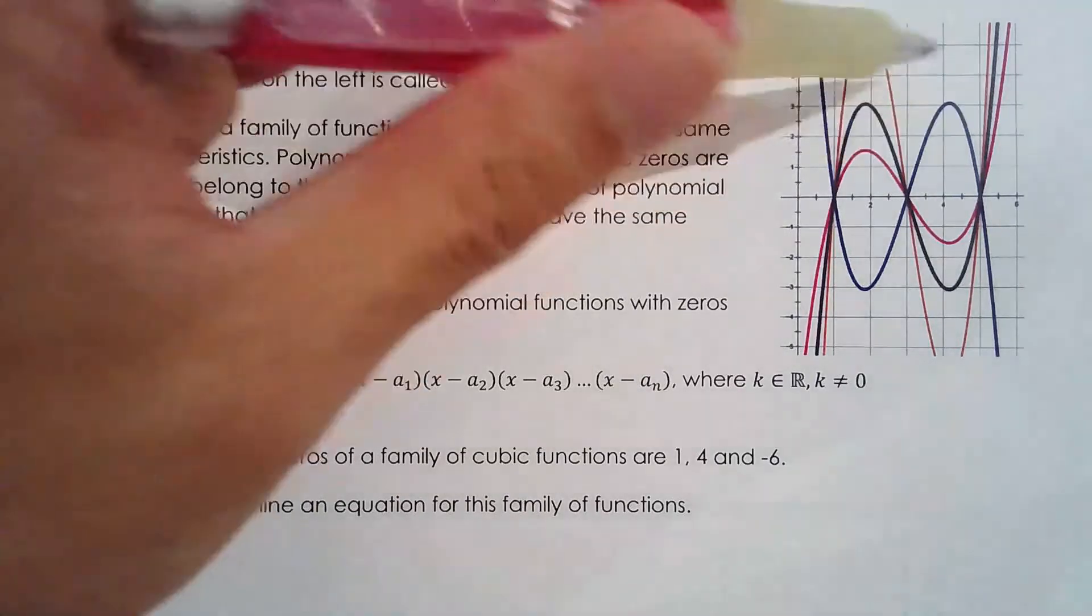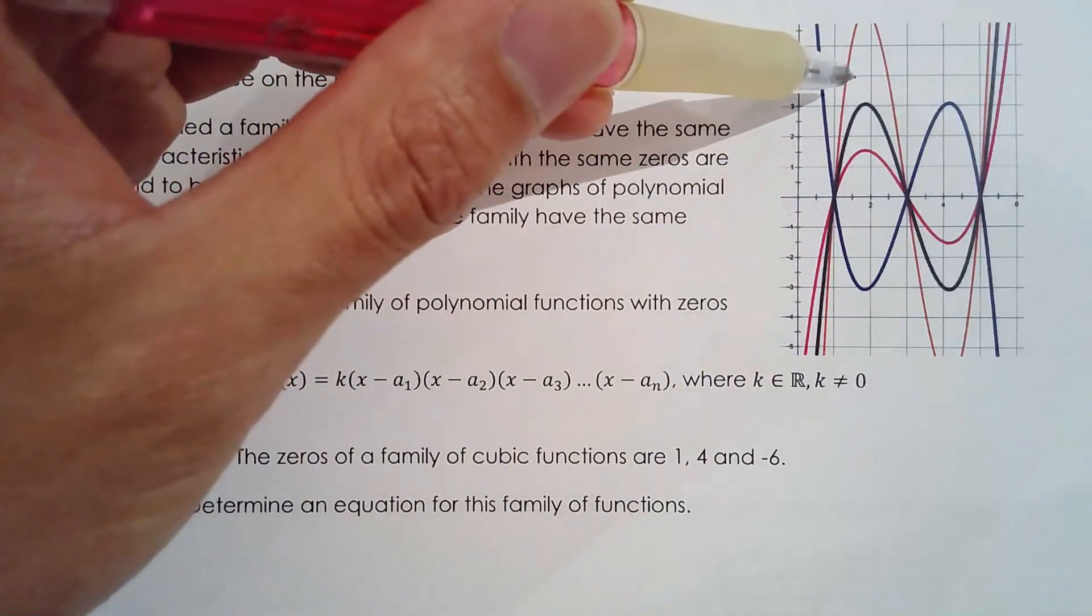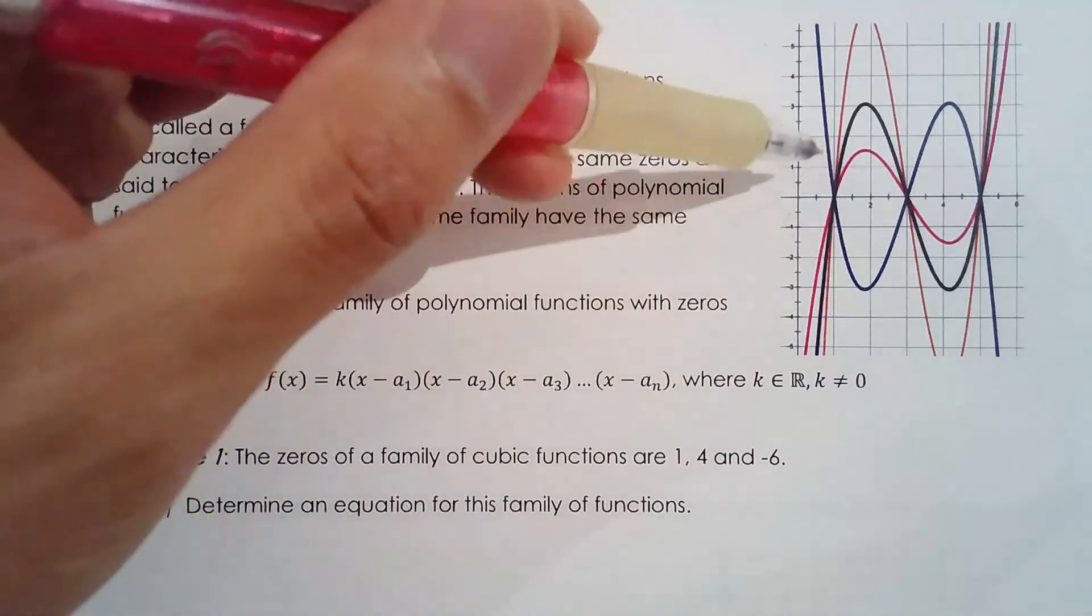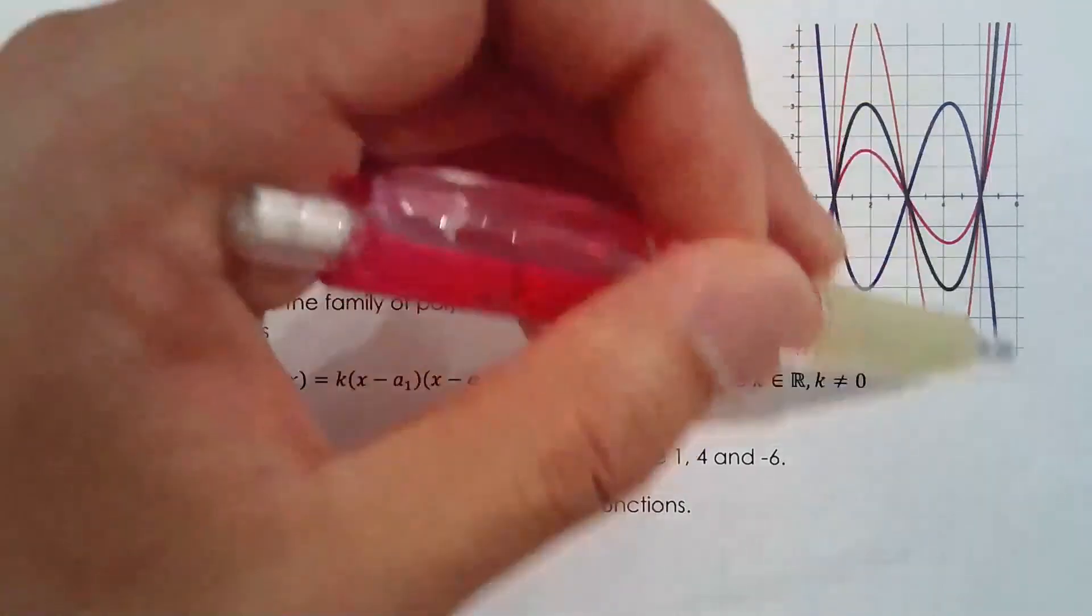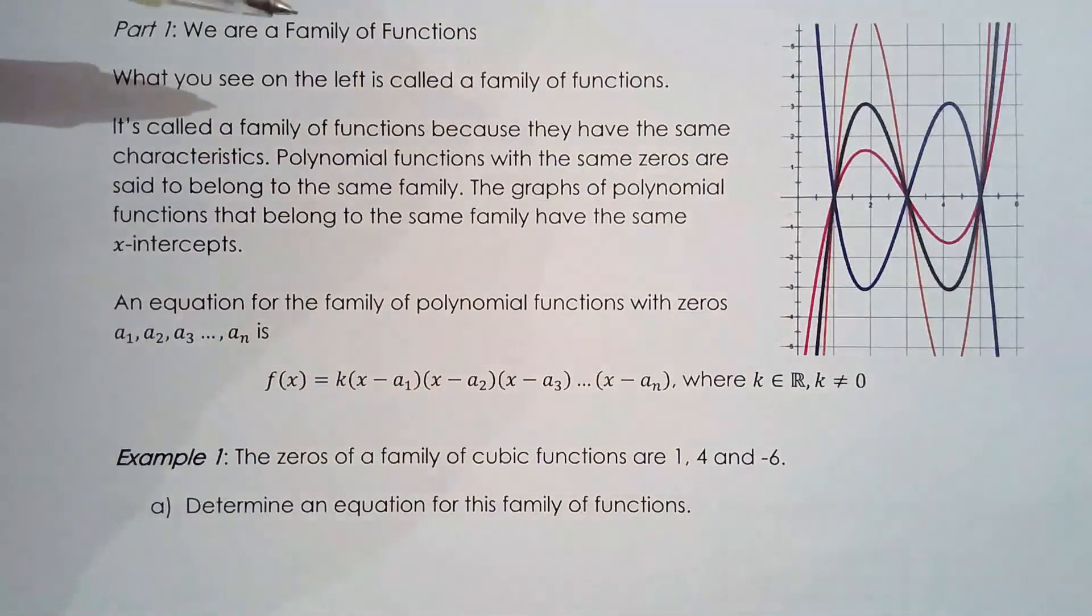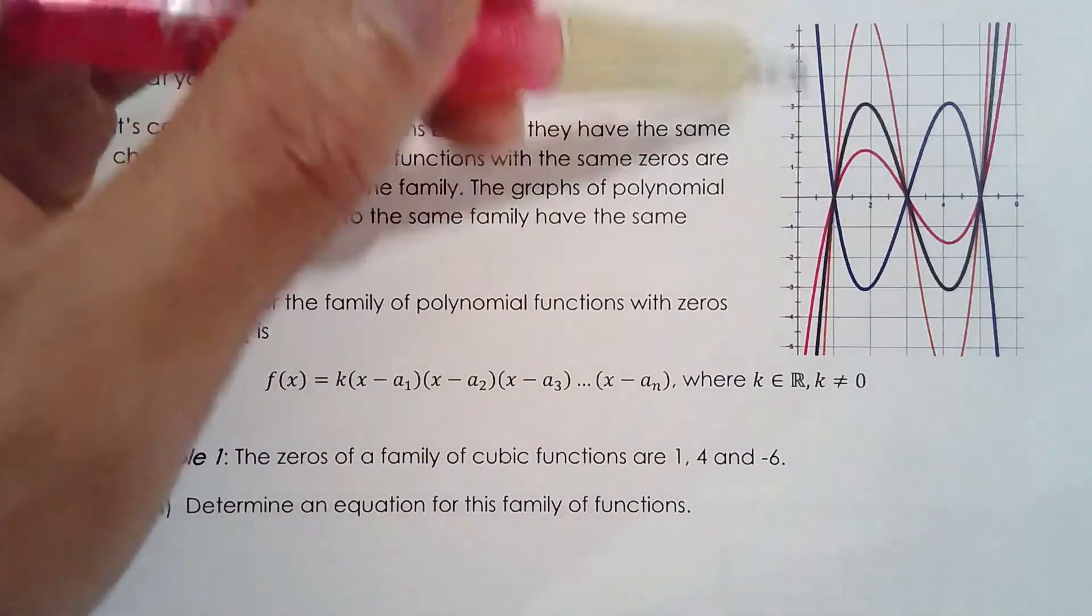So I showed you a graph here. We have I believe four different functions here, four different polynomial functions, but they're all part of the same family of polynomial functions. So each of these functions we say is a member of the family.